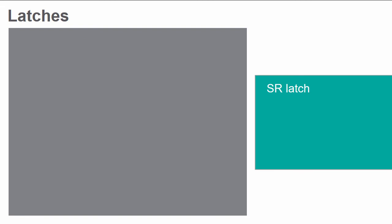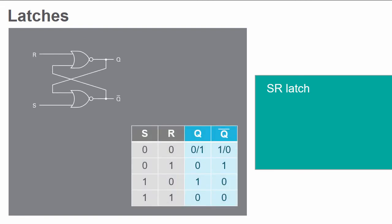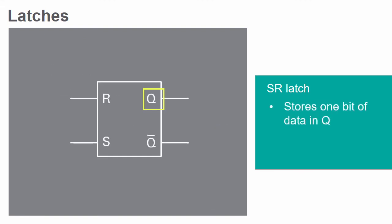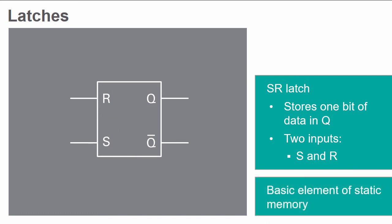One of the simpler sequential circuits is known as a latch. An example of which is the SR latch. It is a bistable element with one bit of state stored in Q. Its state can be controlled through the two inputs S and R. The SR latch represents the basic element for most static memory structures.